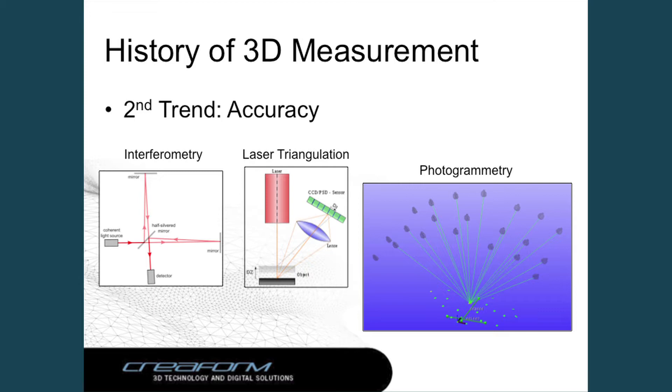For those who are not familiar with photogrammetry: photogrammetry creates 3D point coordinates of targets — retro-reflected targets or features in a picture — by acquiring multiple overlapping images at different angles.